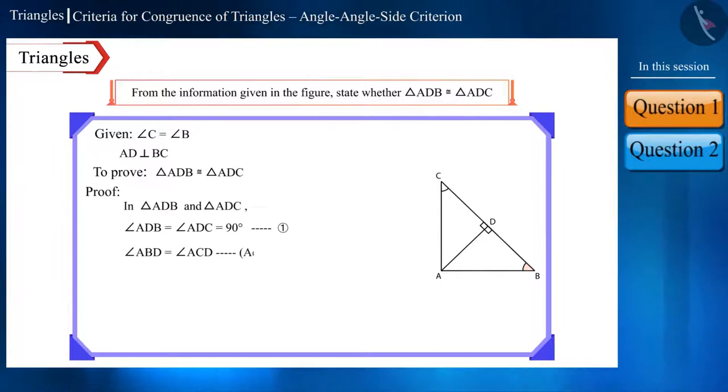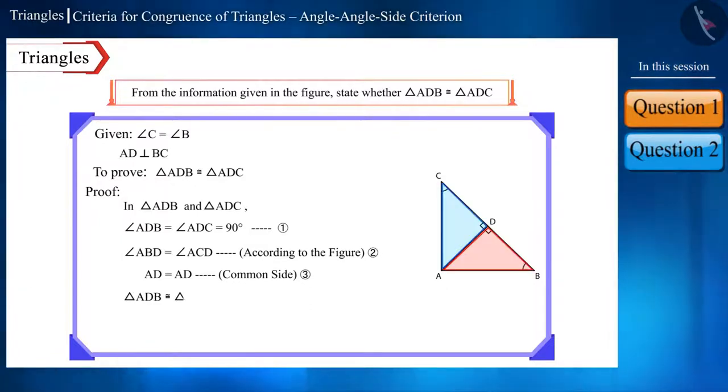both angle ABD and angle ACD are also equal and side AD is the common side. Here, two angles and one side are equal. So both these triangles are congruent according to the angle angle side criterion or AAS for triangles.